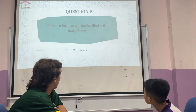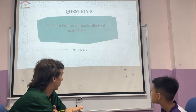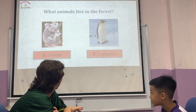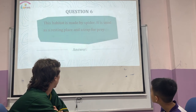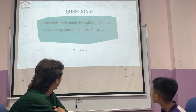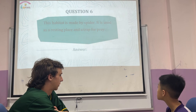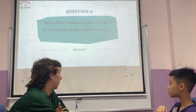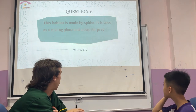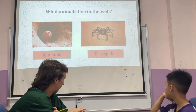This is a large area that is filled with many trees. A forest? Yeah, that's right. What animal lives in the forest? A koala. A koala. Last one. This habitat is made by a spider. It is used to rest and catch prey. Where does a spider live? In the web. Yeah, in the web. That's right. And what animal lives in the web? A spider. That's right.